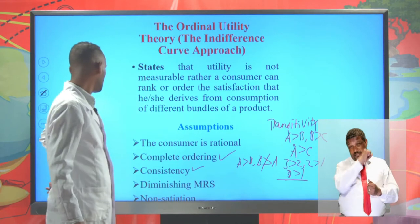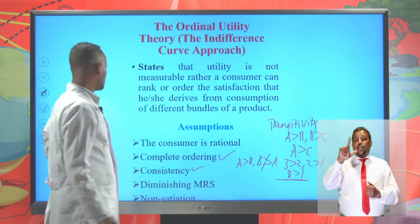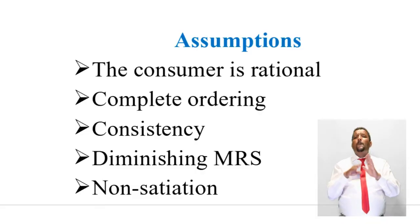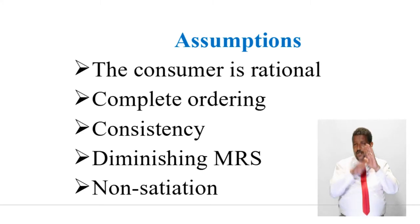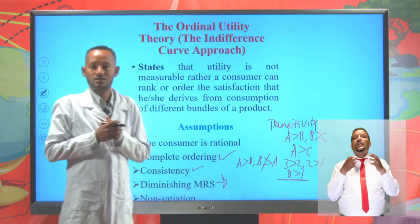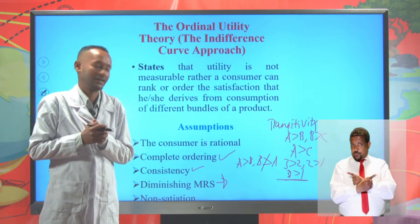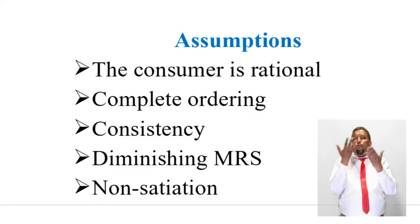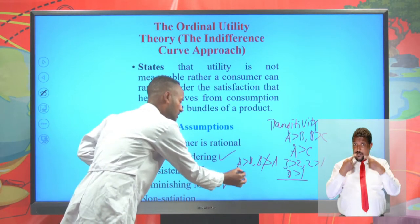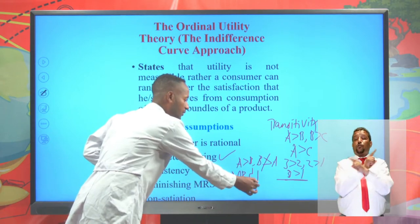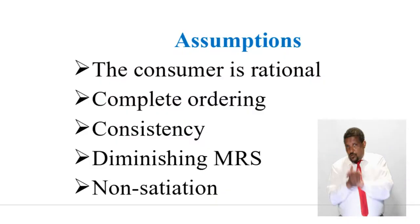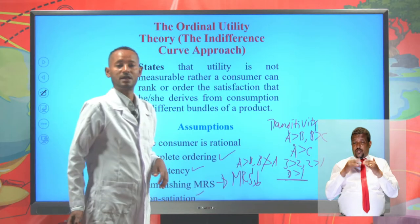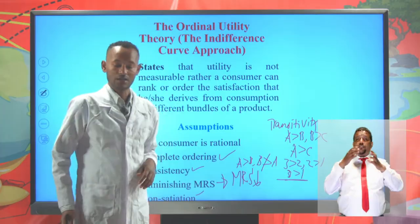Another assumption is diminishing marginal rate of substitution. This means the principle of diminishing marginal rate of substitution is in operation. It tells us the rate by which one commodity is substituted on the same indifference curve will always decline — the marginal rate of substitution will always decline. The last assumption is non-satiation, which means the bigger bundle is always preferred over the smaller one.